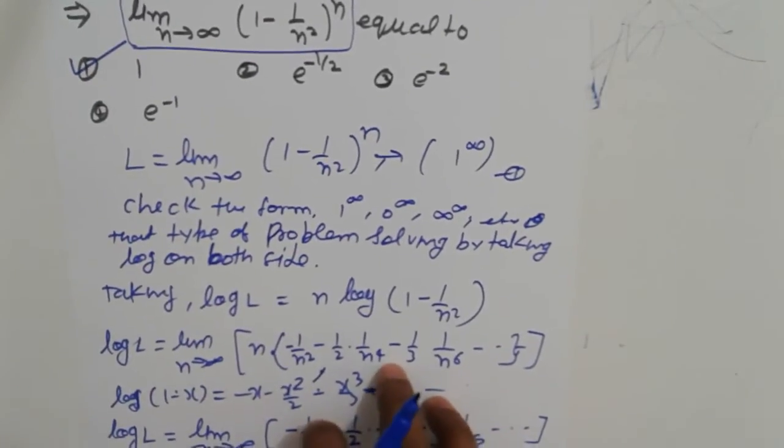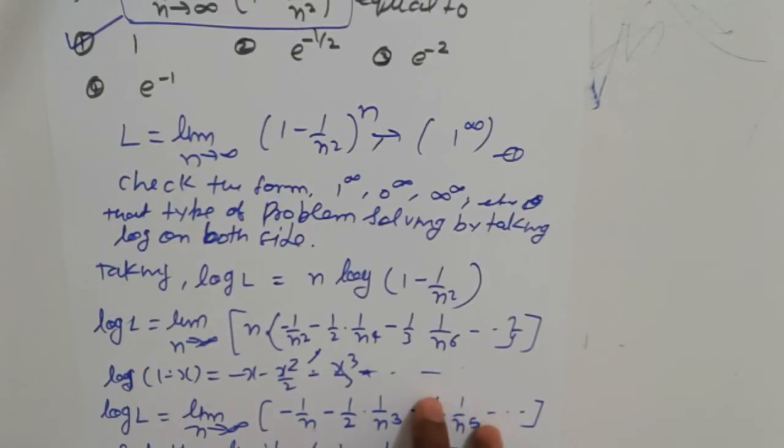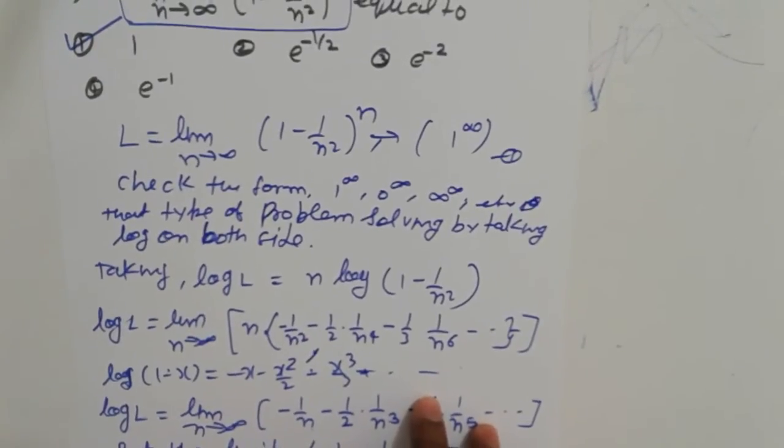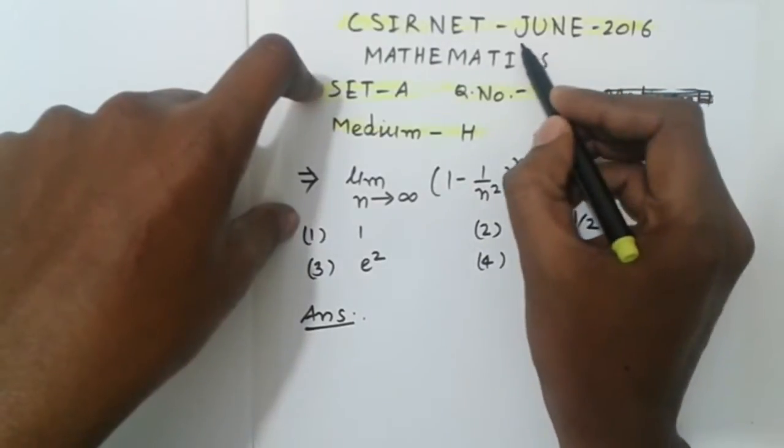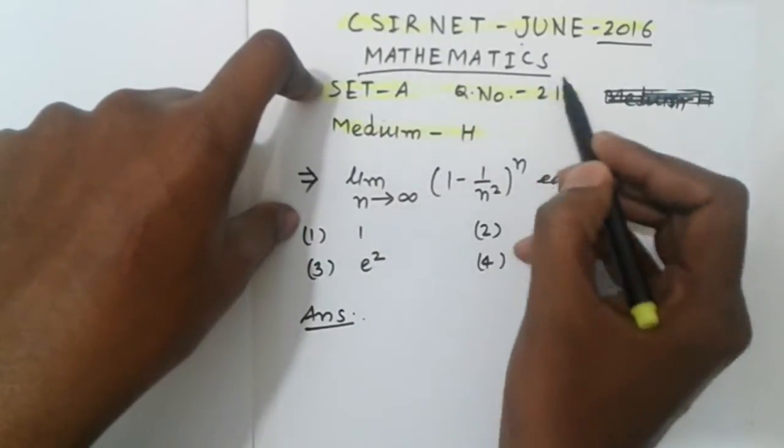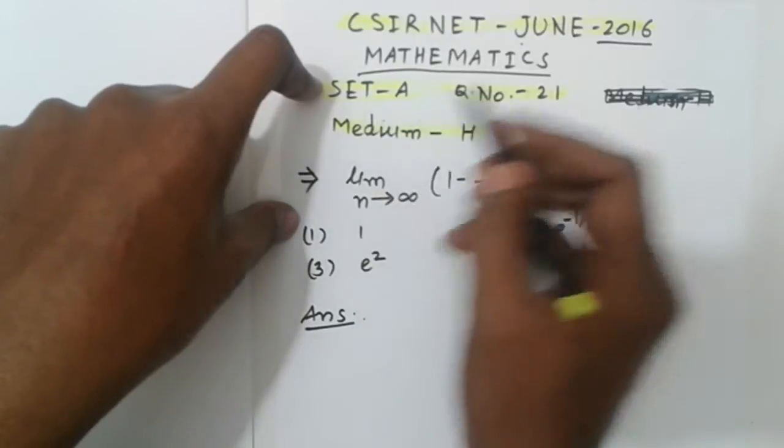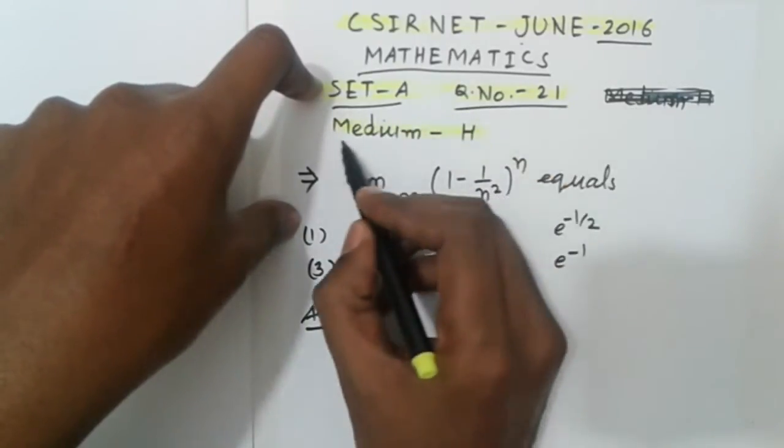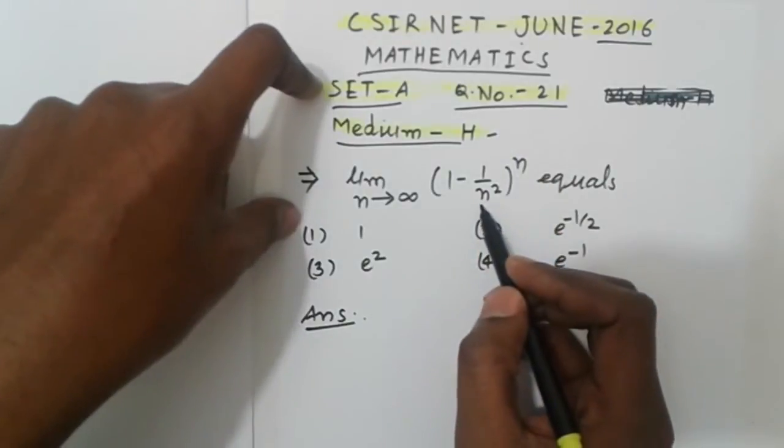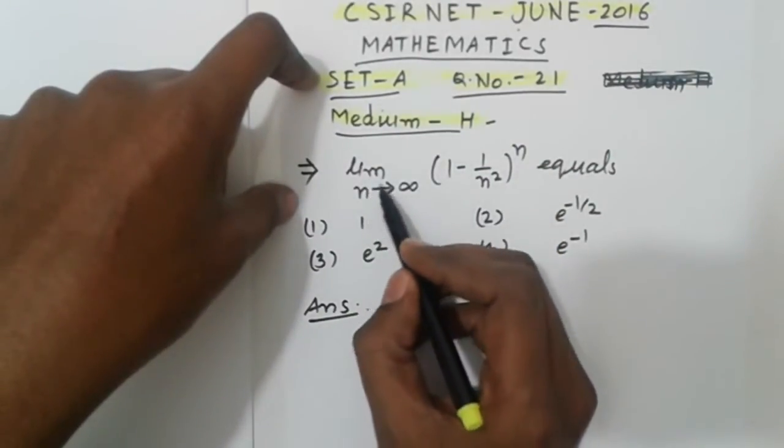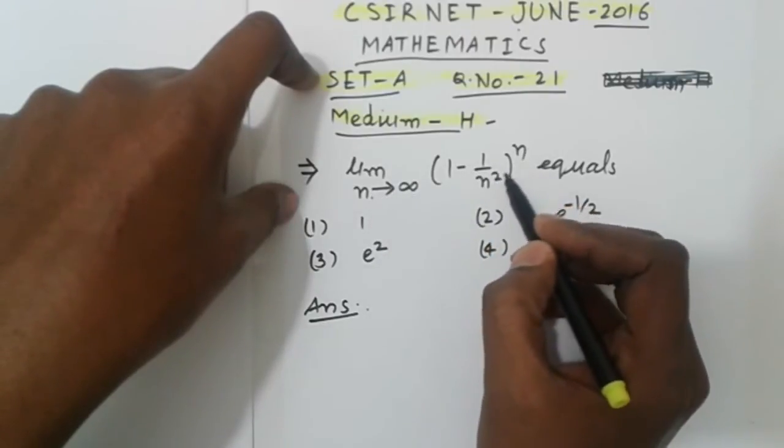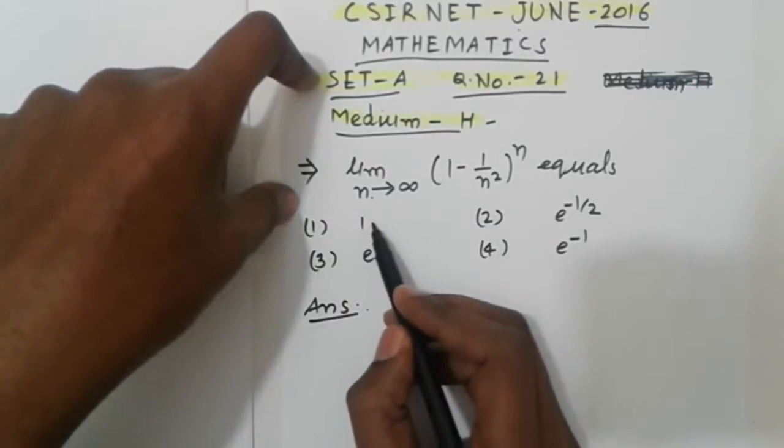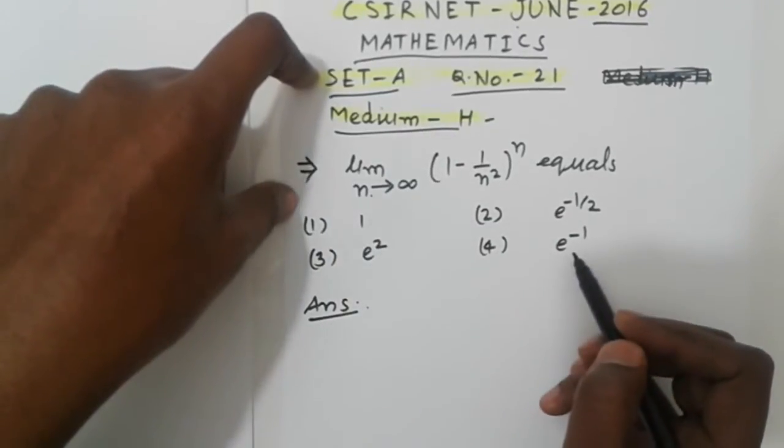That is the answer. Please take care, thank you, and like my video. Subscribe and tell your friends. Now let's look at CSIR NET June 2016 Mathematics, Set A, Question number 21, Medium difficulty. The question is: limit n tending to infinity (1 - 1/n²)ⁿ equals, with four options given: 1, e^(1/2), e⁻¹, e⁻².